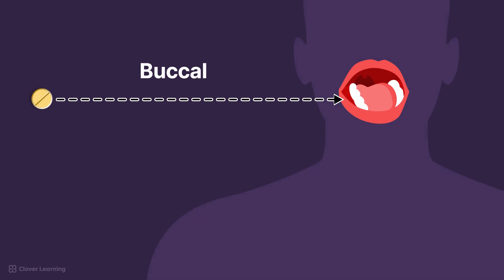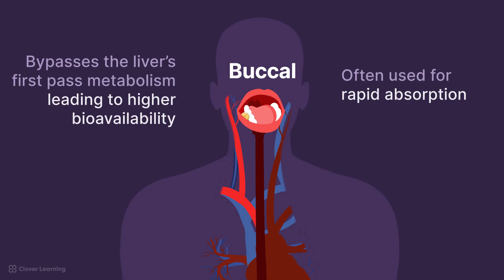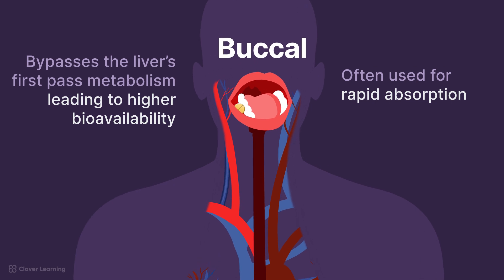Buccal administration involves placing the drug between the gum and the inner cheek, or buccal mucosa. The medication is held in place, allowing it to dissolve gradually and be absorbed directly through the mucous membranes lining the cheek. Drugs administered buccally bypass the liver's first-pass metabolism, leading to potentially higher bioavailability compared to oral administration. This route is particularly useful for drugs that are rapidly inactivated by stomach acids or those that undergo extensive first-pass hepatic metabolism. It's often used for drugs requiring rapid absorption, but not as immediate as sublingual administration.